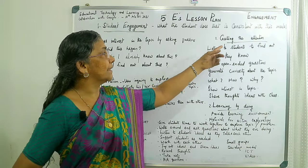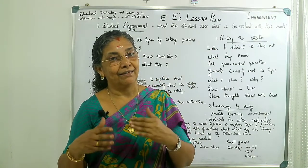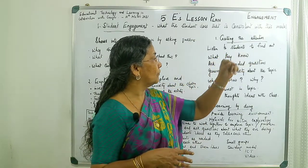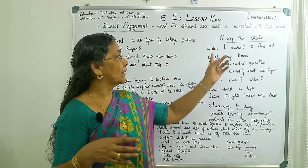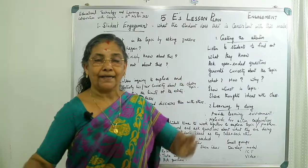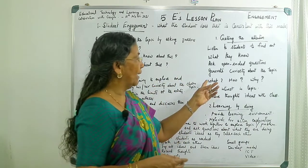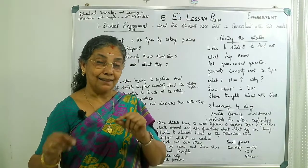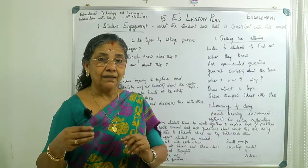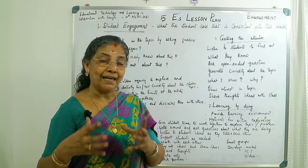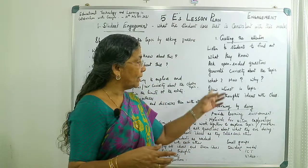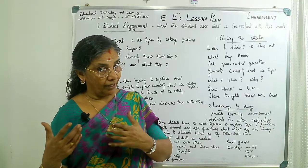The meaning of engagement is getting the attention. When we reach the class, we should get attention from the learners. Listen to students to find out what they know and ask open-ended questions. Ask some small questions and generate curiosity about the topic. The children should have curiosity — what, how, and why. The teacher, as a facilitator, should create an atmosphere where students have curiosity about what the teacher is going to tell in the class, so students started to think about what, how, why, where.